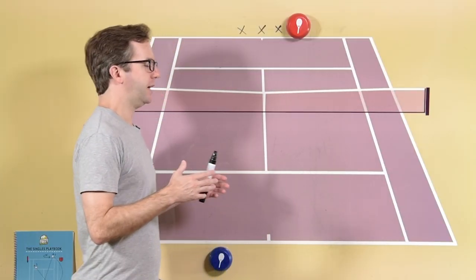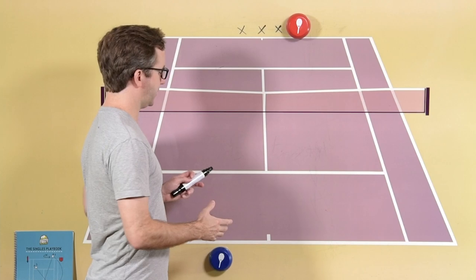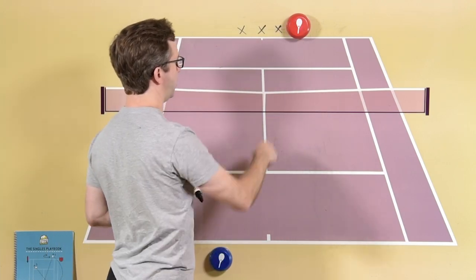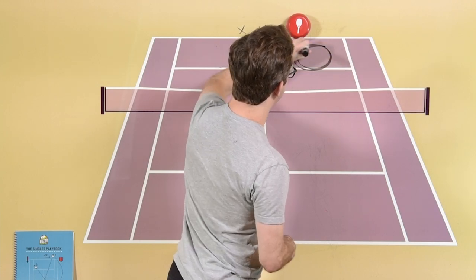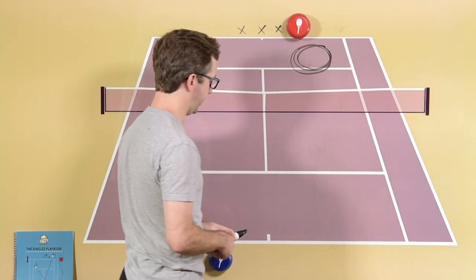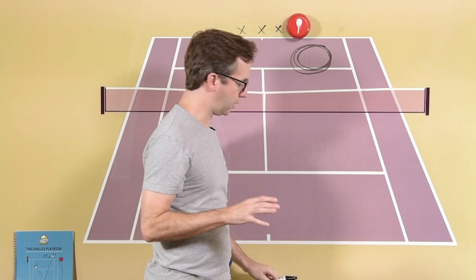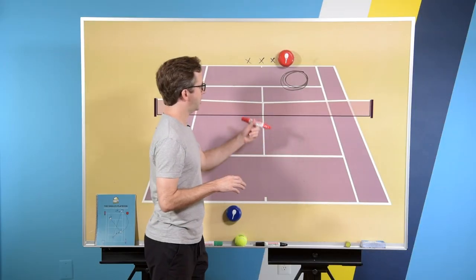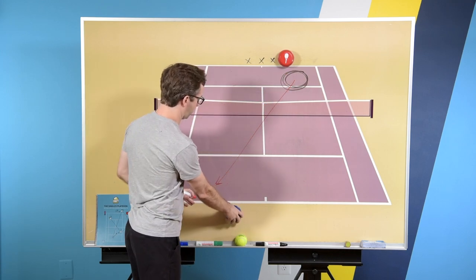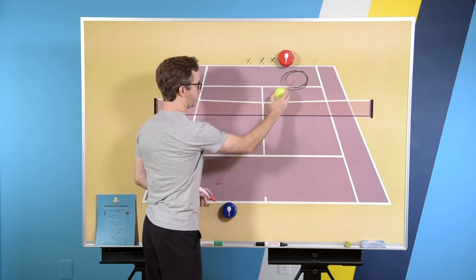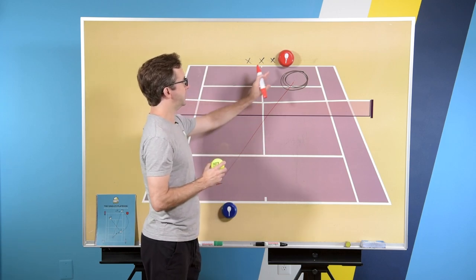But the way that Iga does this is, let's say you've got Iga down here, her opponent up here. Iga's going to hit every single shot to the exact same location, regardless of where her opponent hits. So let's say she starts out in a cross-court rally like this. Her opponent is hitting the ball cross-court. Iga is just going to hit it straight back to this spot.